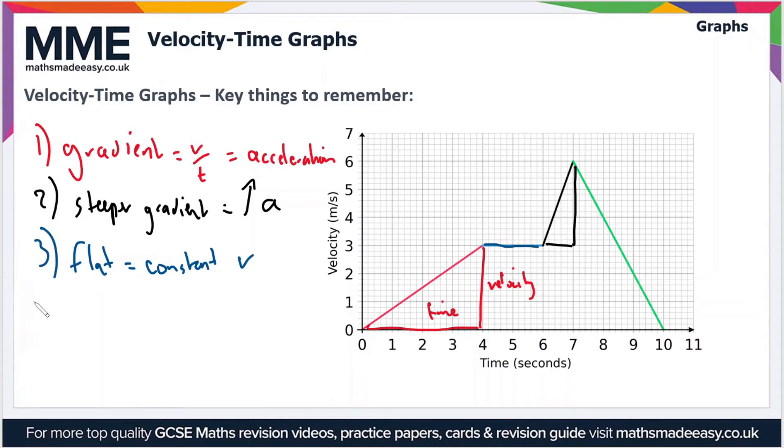The fourth point is that if you have a negative gradient, such as in this green section of the graph here, that means you are slowing down. So you're decelerating, so acceleration is decreasing.